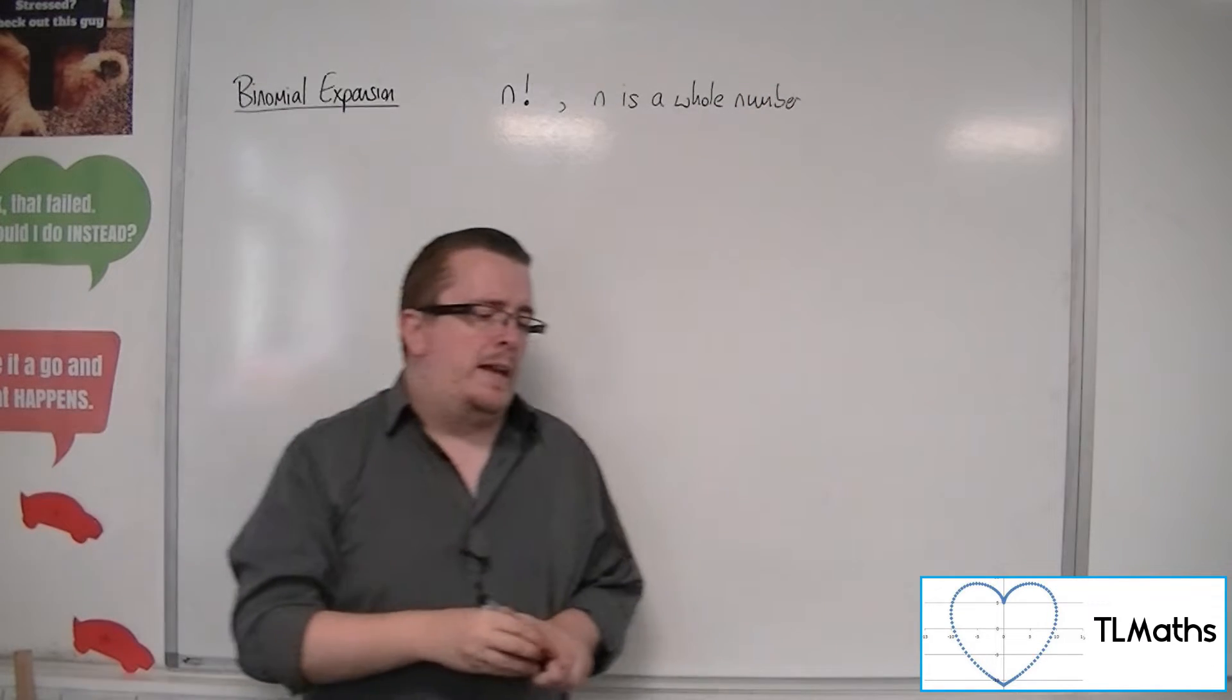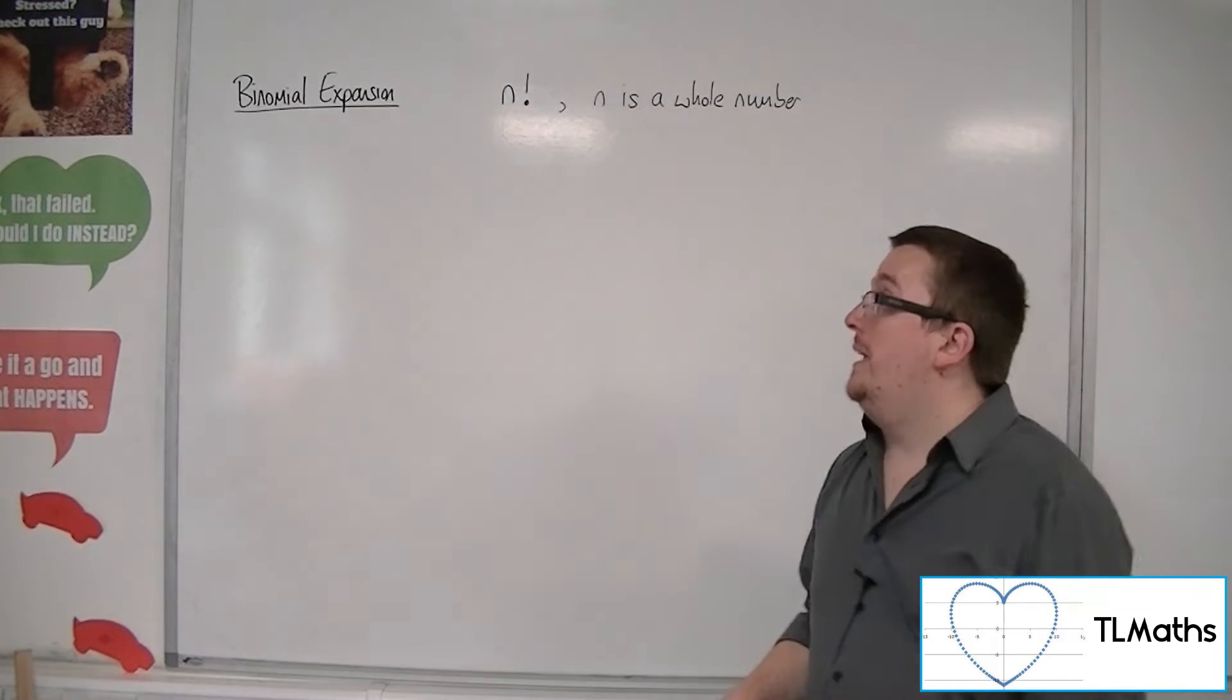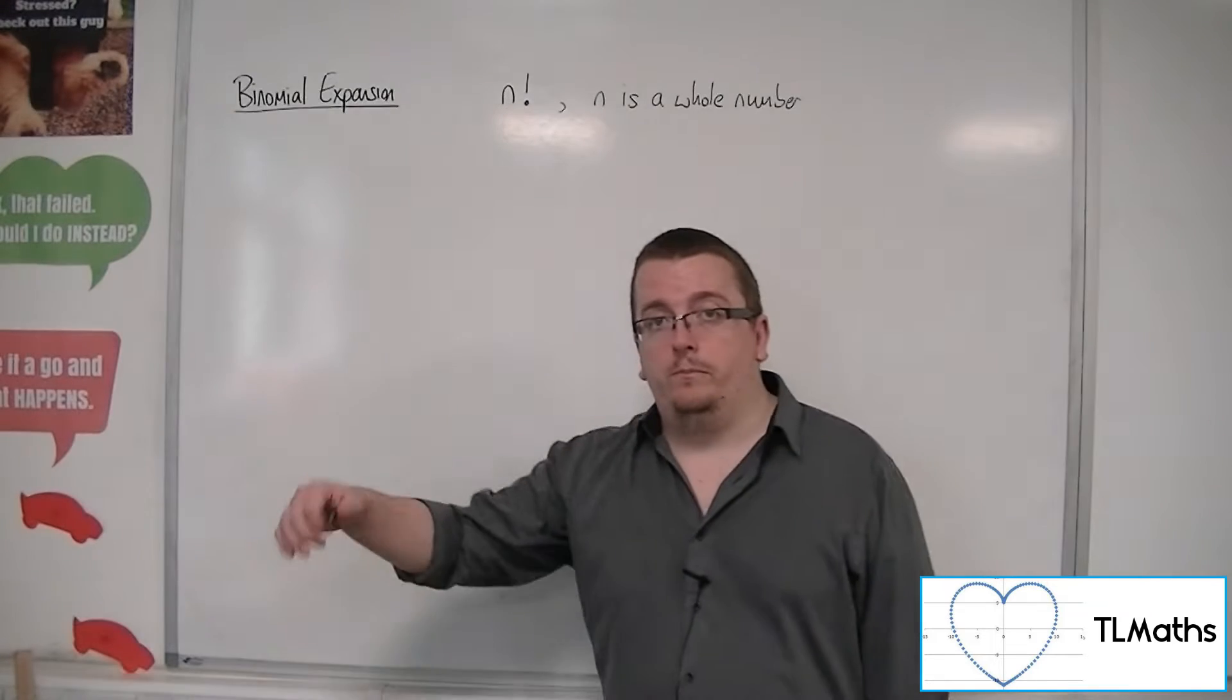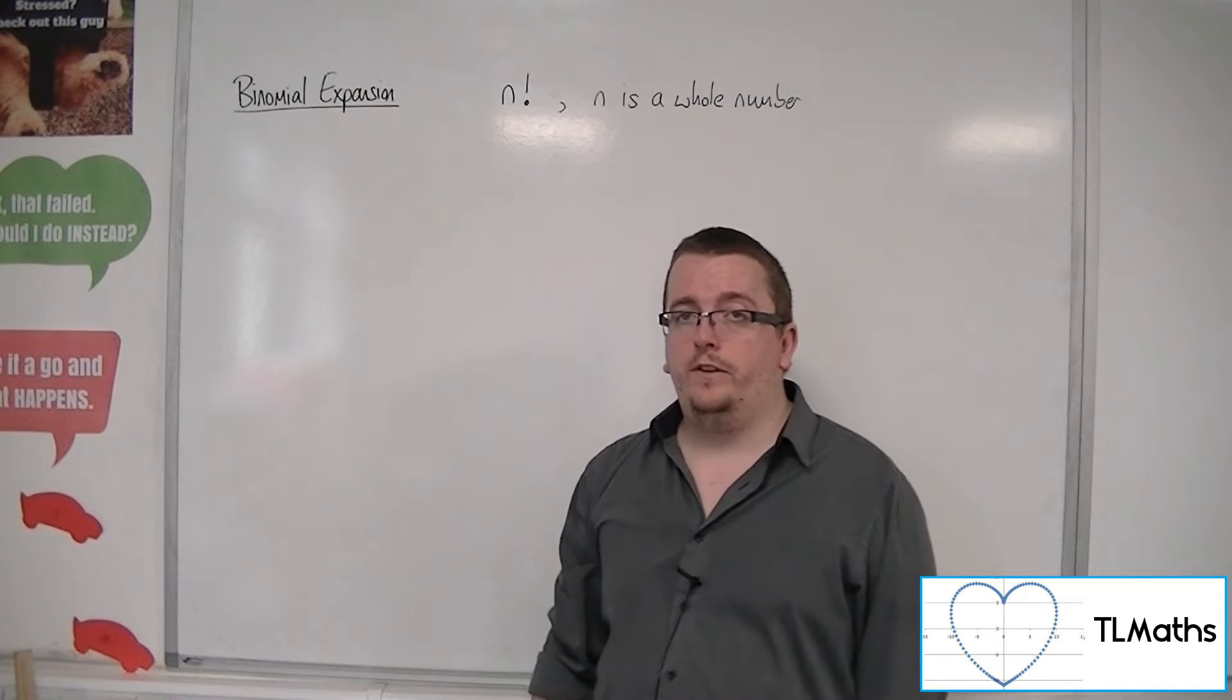So I shouldn't say integer because n won't be negative and can go from 0, 1, 2, 3, 4, 5.